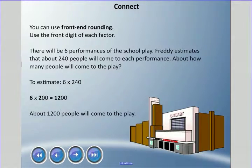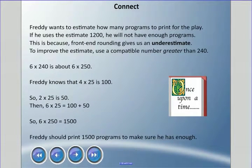Freddy wants to estimate how many programs to print for the play. If he uses the estimate 1200, he will not have enough programs because when we do front-end rounding, it always gives us an underestimate. To improve the estimate, we're going to use a compatible number greater than 240. Let's say we try 250. Freddy knows that 4 times 25 is 100.